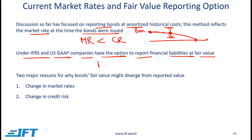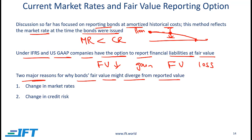If interest rates change such that the fair value comes down, that means we have a reduction in liability, and a reduction in liability represents a gain. On the other hand, if the fair value goes up, that means we have an increase in liability, and an increase in liability represents a loss. There are two major reasons why a bond's fair value might diverge from reported value: changes in market rates, and changes in the credit risk of the company issuing the bond.